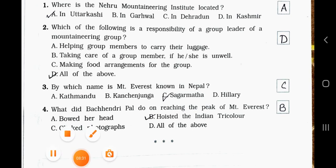Question 3: By which name is Mount Everest known in Nepal? A. Kathmandu, B. Kanchenjunga, C. Sagarmatha, D. Hillary. Answer is option C — Sagarmatha. Question 4: What did Bachendri Pal do on reaching the peak of Mount Everest? A. Bowed her head, B. Hoisted the Indian tricolor, C. Clicked photographs, D. All of the above. Answer is option B — hoisted the Indian tricolor.